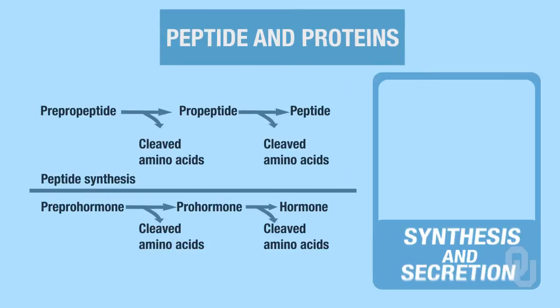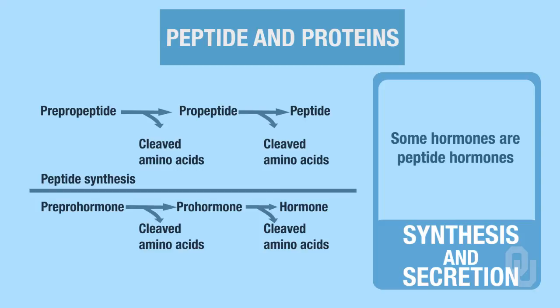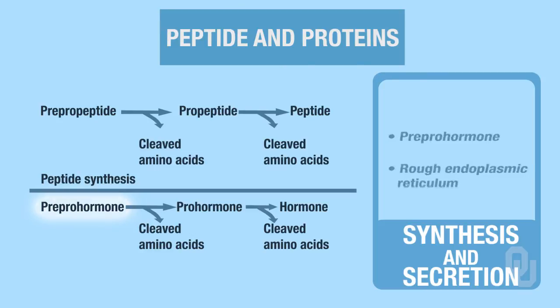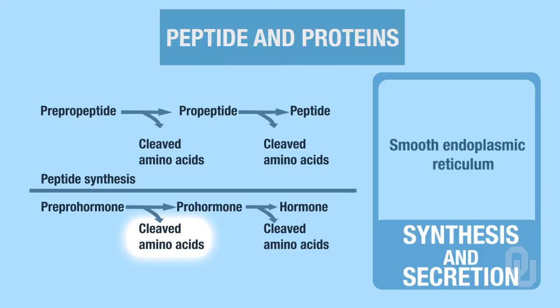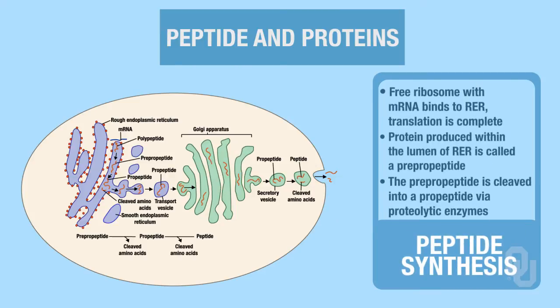Next we look at synthesis and secretion of peptides and proteins. This is where we have a pre-pro-peptide, a pro-peptide, and a peptide, and to go from one to the next they were cleaved via amino acids. For peptide hormones, we change the terminology slightly: we start with a pre-pro-hormone made by the rough endoplasmic reticulum, cleave off some amino acids in the smooth endoplasmic reticulum to get a pro-hormone, then cleave more in the Golgi apparatus to get our final functioning hormone.